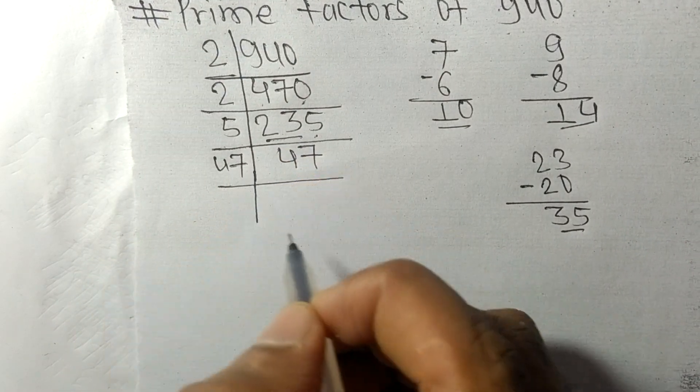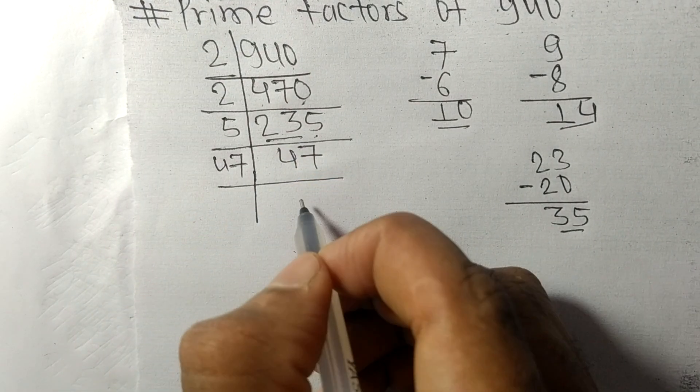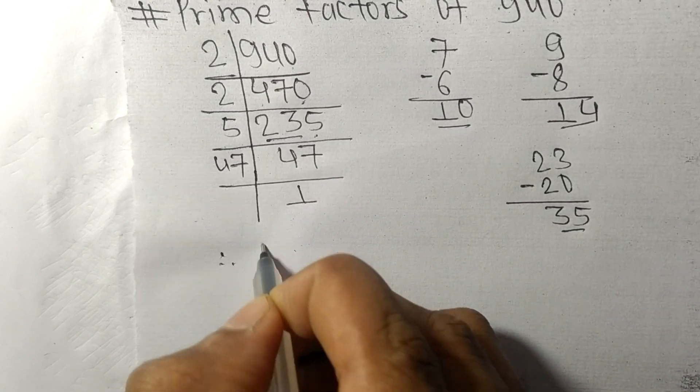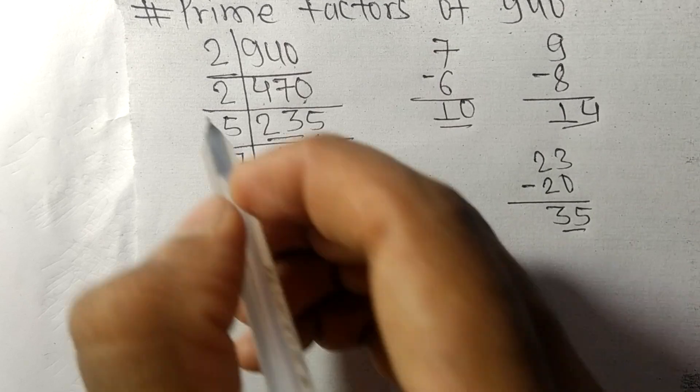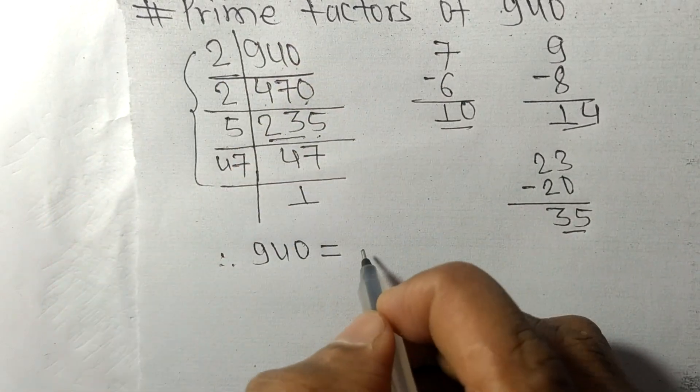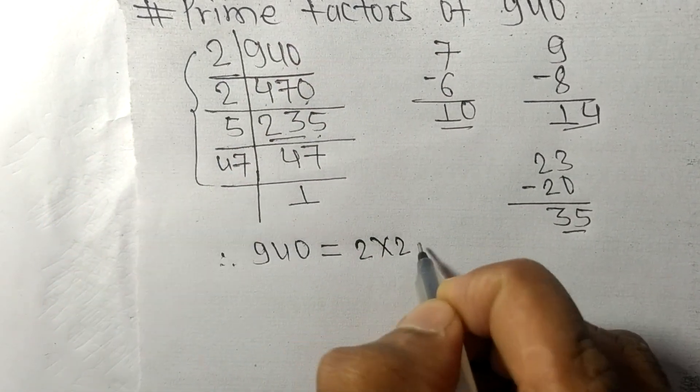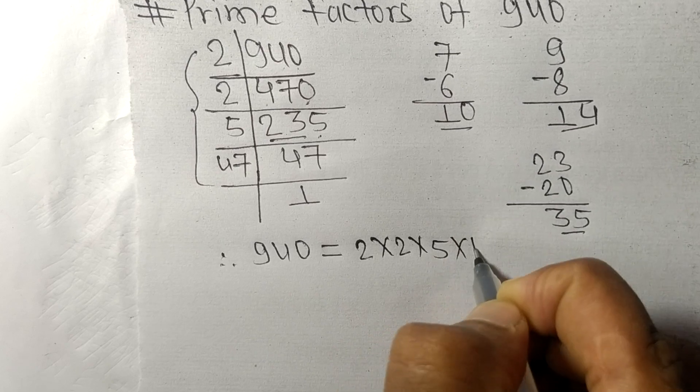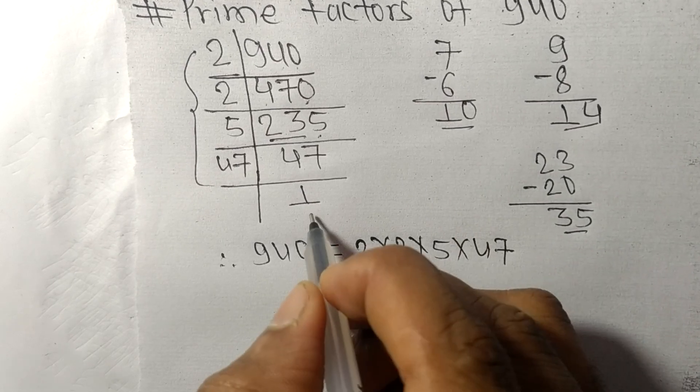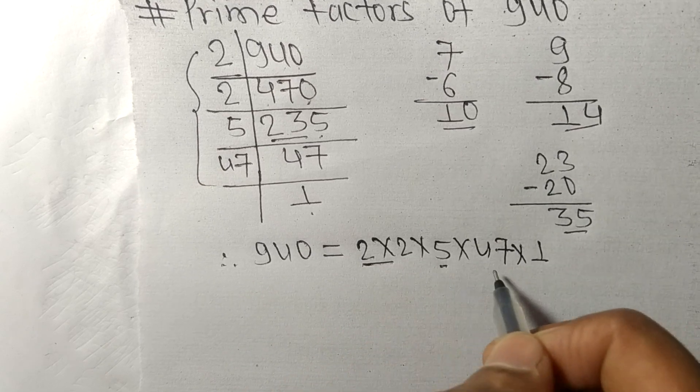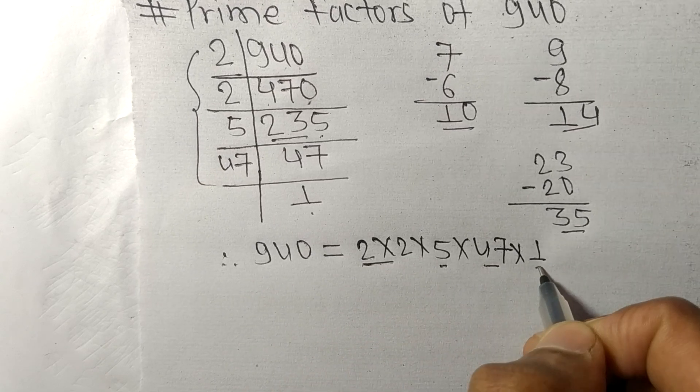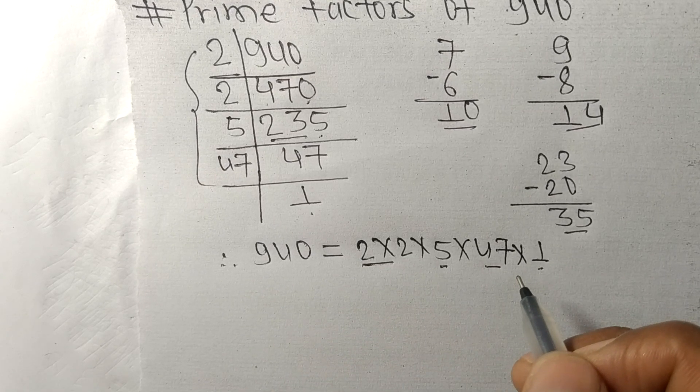On dividing we get 1. Therefore 940 is equal to, from this side it is 2 times 2 times 5 times 47. From here it is 1. So this 2, 5, 47, and 1 are the prime factors of 940.